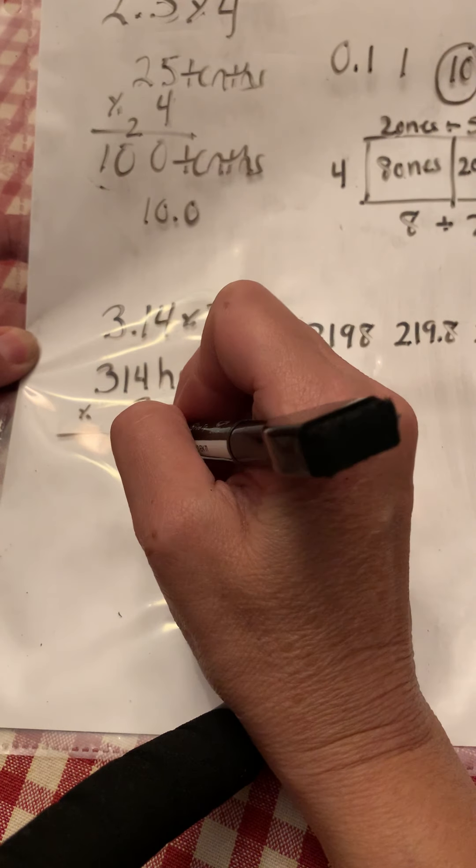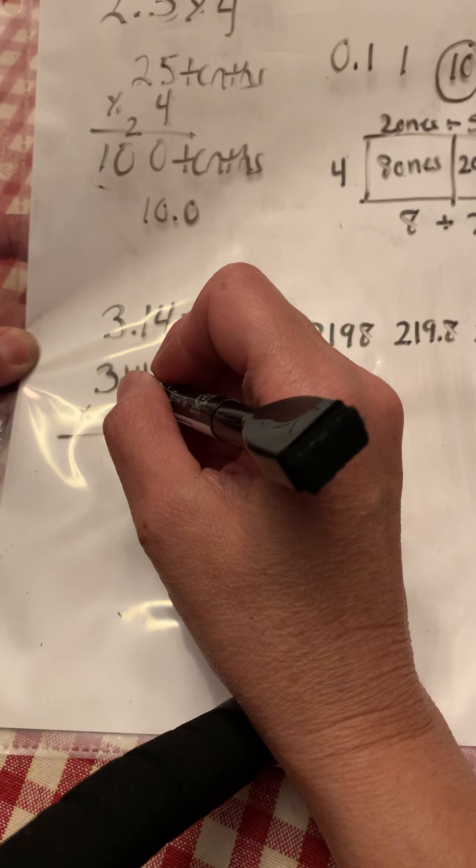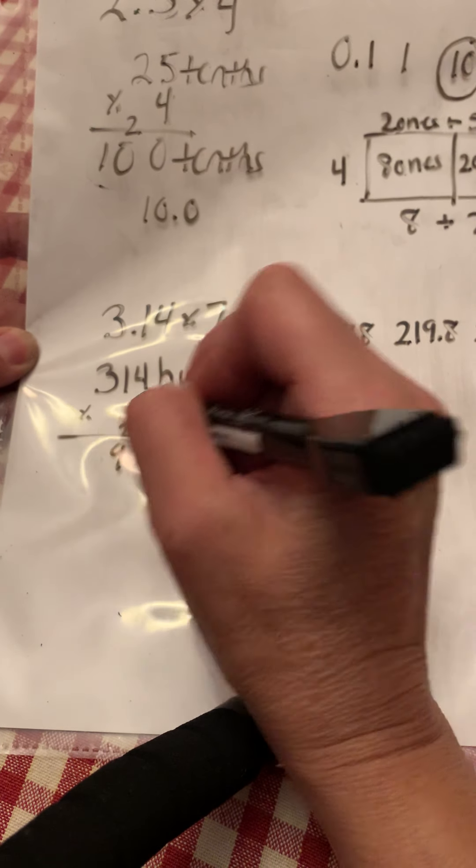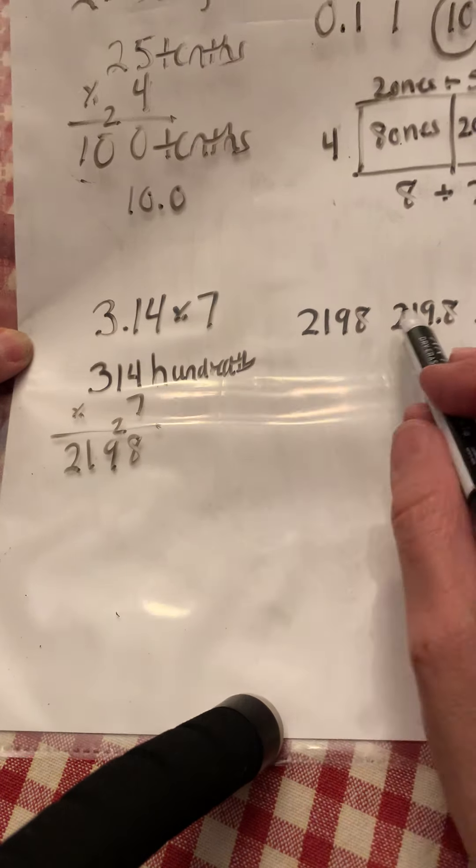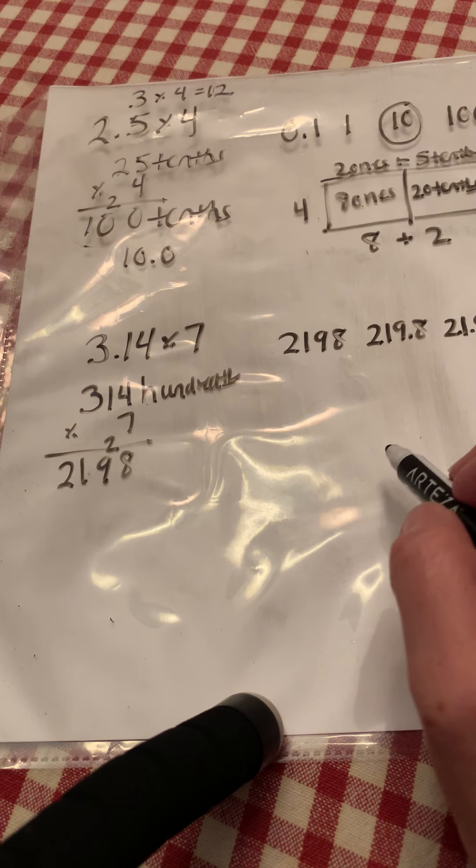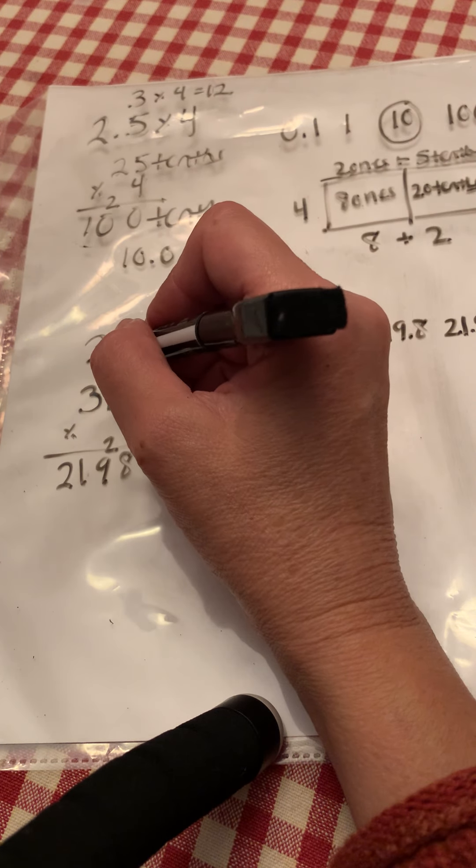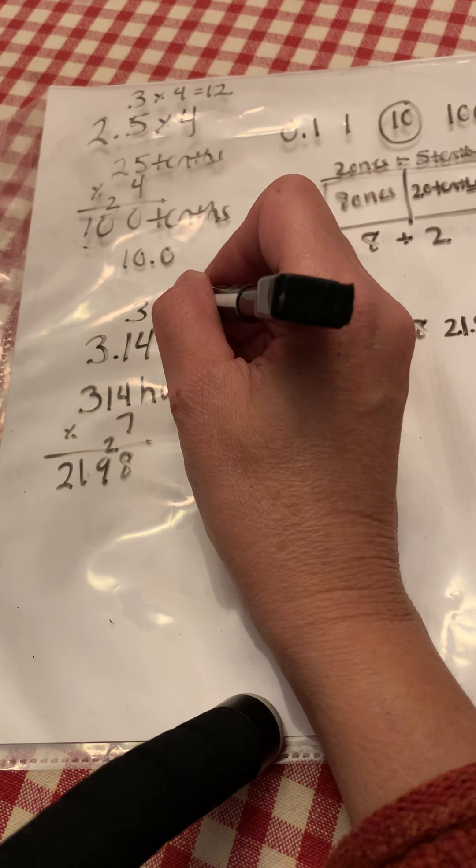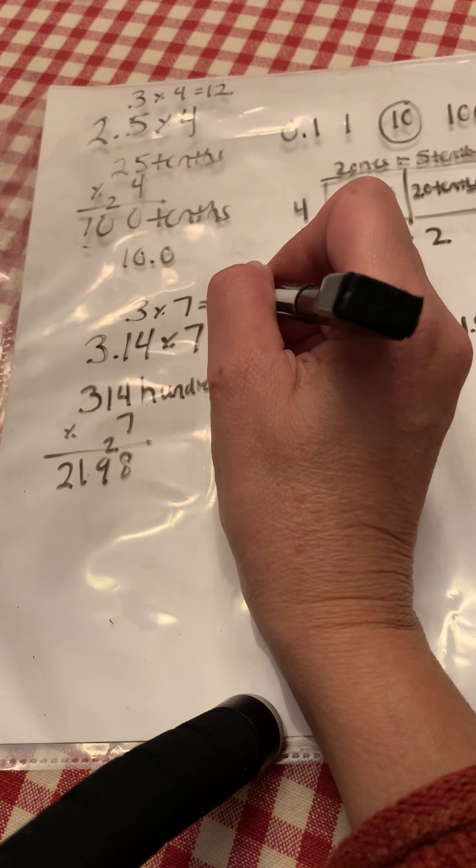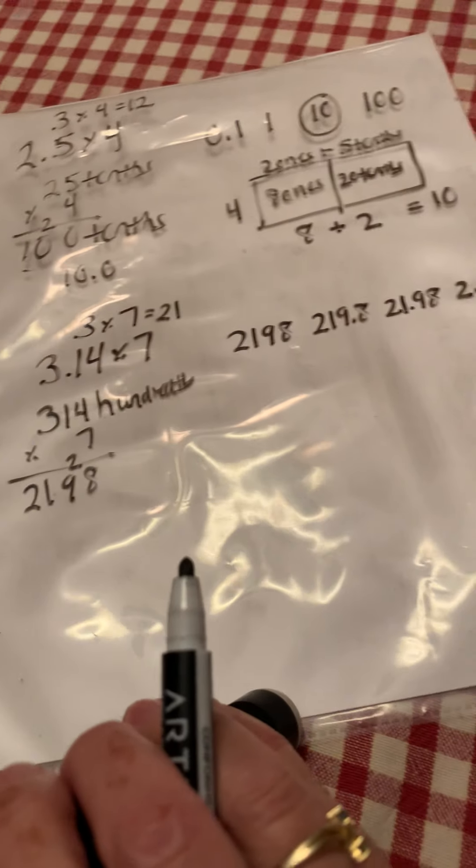Seven times four is 28, that's eight ones and two tenths. Seven times one is seven, plus two is nine. Seven times three is 21. Those are the same digits that they gave you. Then the next thing we do is some estimation, some rounding. Well, 3.14 hundredths rounds to three, three times seven is 21. Look over here. Which one do you think is the most reasonable?